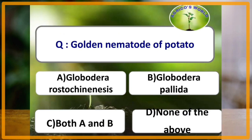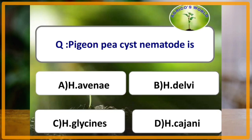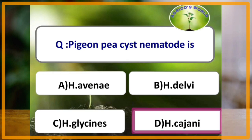Golden nematode of potato is Globodera rostochiensis and Globodera pallida; both are the golden nematode of potato. Maize cyst nematode is Heterodera zeae; PGMP cyst nematode is Heterodera cajani.